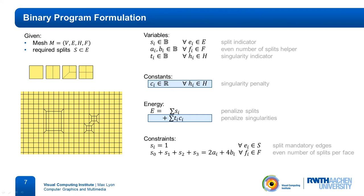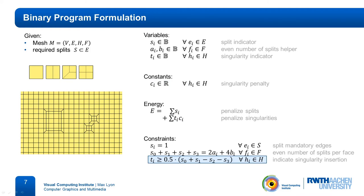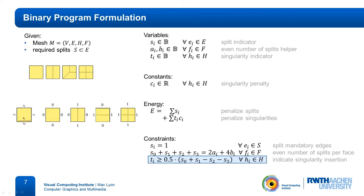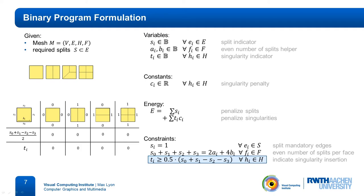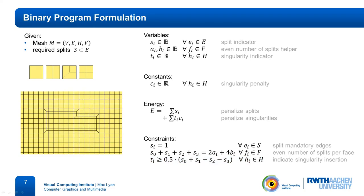To force these variables to 1 if a Y-configuration is inserted, we have the following constraint. If none, all, or two opposite edges are split, the term on the right-hand side will always be 0. The term only becomes 1 for the Y-configuration that splits the edge of the half-edge as well as the next one. We add four constraints per face with permuted s variables to detect the other Y-configurations. By adjusting the singularity penalty c, a tradeoff between locality and number of added singularities can be achieved. A low penalty leads to more local refinement, while a larger penalty leads to fewer singularities at the cost of more splits.